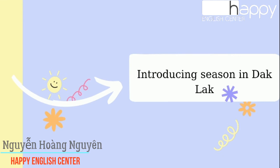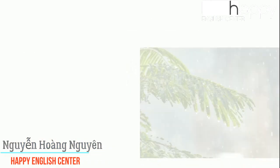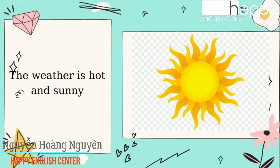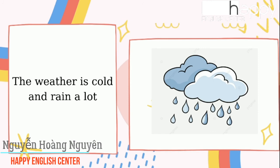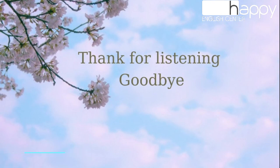Finally, I would like to tell you about the seasons in Daklak. Daklak, where I live, has two seasons: the dry season and the rainy season. In the dry season, the weather is hot and sunny. In the rainy season, the weather is cold and it rains a lot. Thanks for listening and goodbye.